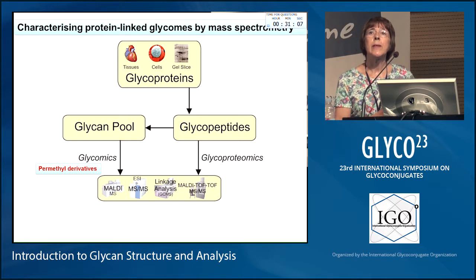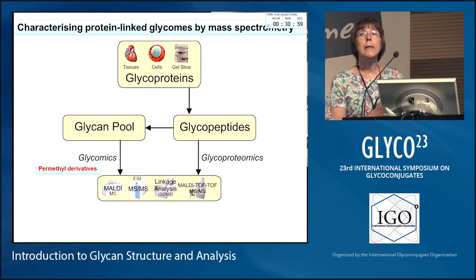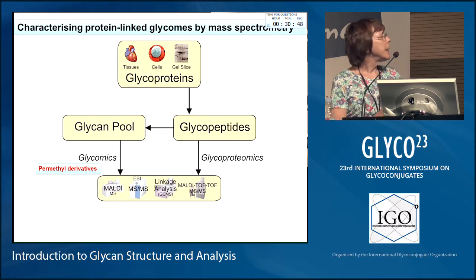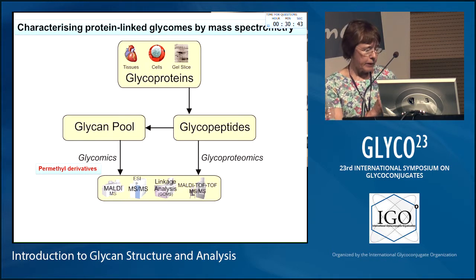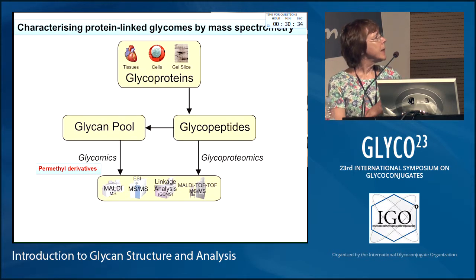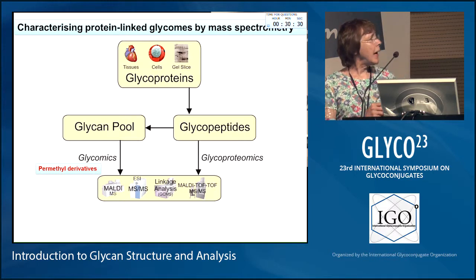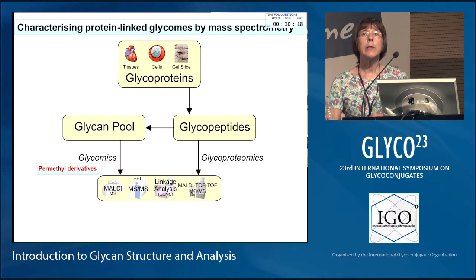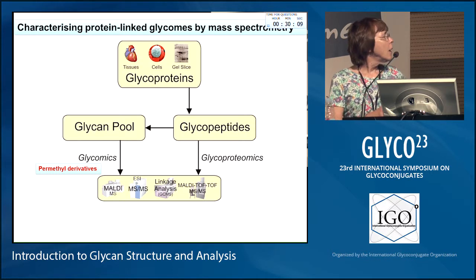It was a number of years later, in the late 1980s, before the significance of this was understood, when the selectins — which are the Sialyl Lewis X binding lectins — were cloned and it was realized that this epitope is important for trafficking of white blood cells and a whole variety of other biological reactions. But the key thing was that we were able to see this glycan, even though at the time we didn't know the size of the glycans we were looking at. Now we do — they were well over 5,000 to 8,000 molecular weight, and the mass spectrometers of those days, in principle, couldn't detect ions of that size.